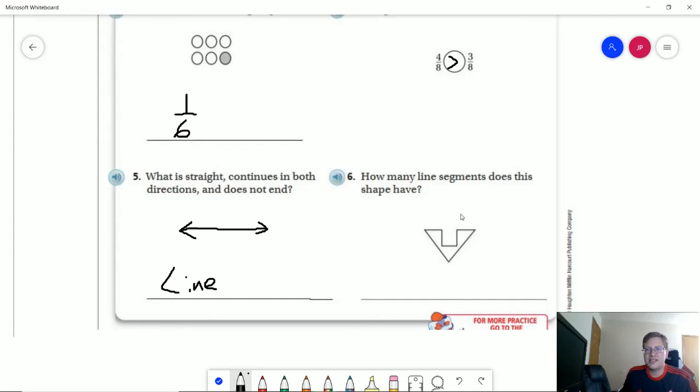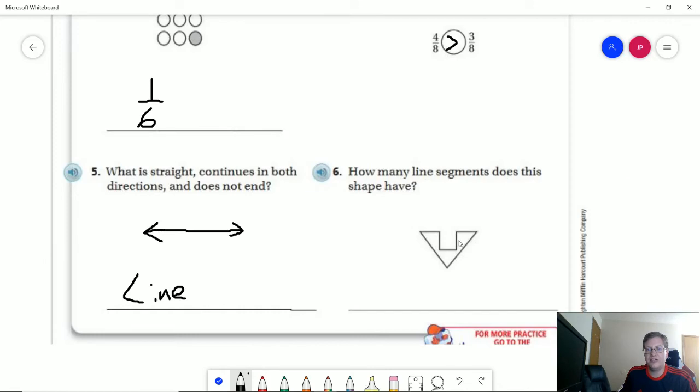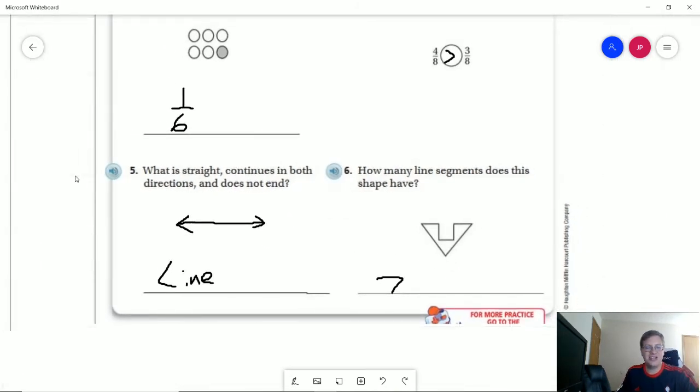And number six, how many line segments? We have one, two, three, four, five, six, seven. So that's a very interesting shape to have seven sides, but that's what we have.